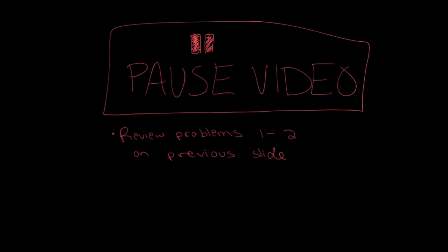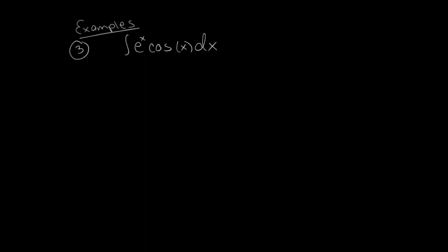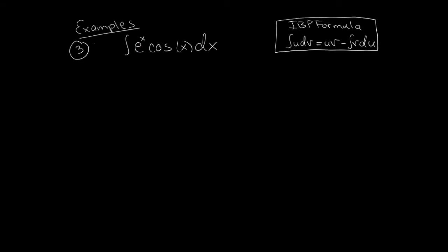The two problems we just covered are the main bulk of integration by parts — that's what you really need to know solid before class. The next example is a little exotic and might seem intimidating, but we will talk about it in class too. Here's problem number three: the antiderivative of e to the x times cosine of x. This problem is hard because e to the x doesn't get simpler when you differentiate it, and neither does cosine — it just turns into sine. So this problem is going to feel like we're going in circles.